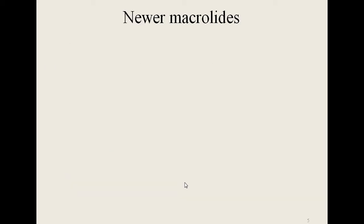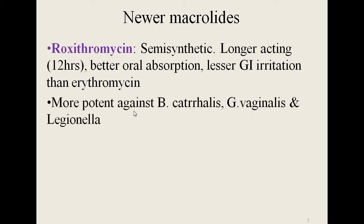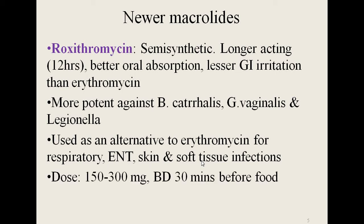The newer macrolides are roxithromycin, azithromycin, clarithromycin and spiramycin. Roxithromycin is semi-synthetic and longer acting compared to erythromycin. Erythromycin had to be given four times a day whereas roxithromycin is given twice a day. It has better oral absorption and lesser gastrointestinal irritation or diarrhea compared to erythromycin. Roxithromycin is more potent against Branhamella, Gardnerella vaginalis and Legionella infections. It is used as an alternative to erythromycin for respiratory tract infections, ear, nose, throat, skin and soft tissue infections. The usual dose is 150 to 300 milligrams twice a day, taken half an hour before meals.